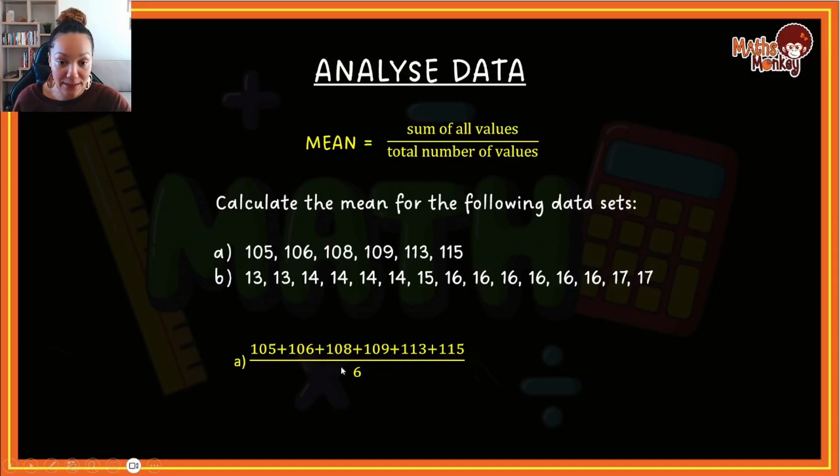I've added all six values and divided by six because I've got six values. Therefore, the mean for the first data set will be 656 divided by 6, which is 109.3. You'll notice that when you look at the data set, your answer should resemble more or less the center of the data.